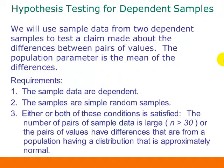The second requirement is that the samples are simple random samples. Third, either or both of these conditions must be satisfied: either the number of pairs of sample data is large (n greater than 30), or the pairs of values have differences that come from a population with an approximately normal distribution.